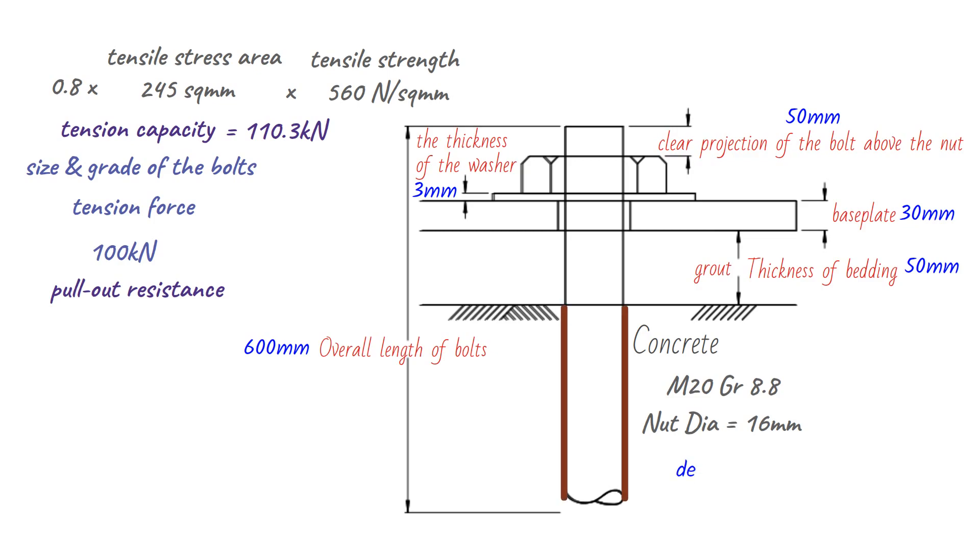To calculate the depth of embedment, we use the following formula: 600 mm minus 50 mm minus 16 mm minus 3 mm minus 30 mm minus 50 mm, which gives us 451 mm.